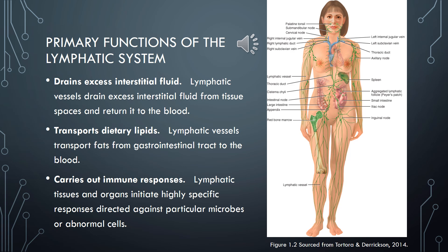The lymphatic system includes a vast network of vessels, which can be seen in the image to your right, as the long green lines running through the body. The lymphatic vessels transport excess fluid and some protein away from the interstitial spaces in most tissues and return it to the bloodstream.